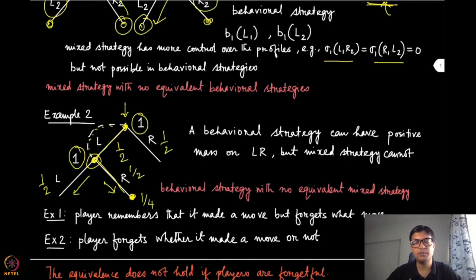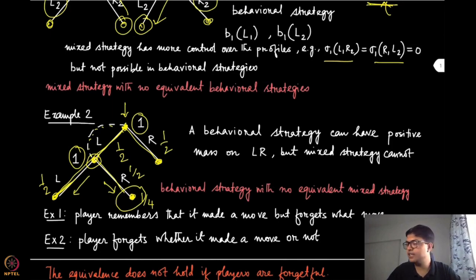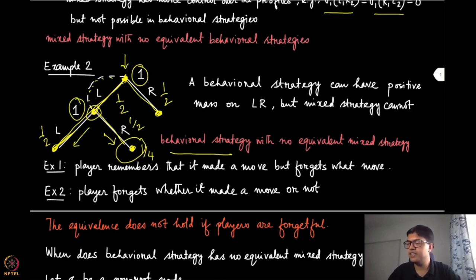In this particular case, the behavioral strategy gives more flexibility than the mixed strategy. In the mixed strategy world, choosing some probability on l means going all the way to one terminal node; choosing r means reaching a different node. There is no way to reach an intermediate node under a pure strategy, so it can only be reached with zero probability under the mixed strategy. That is the example where a behavioral strategy does not have an equivalent mixed strategy. Both examples involve forgetfulness of different kinds: in the first, the player remembers making a move but forgets which; in the second, it forgets whether it made a move at all.